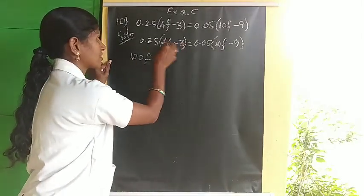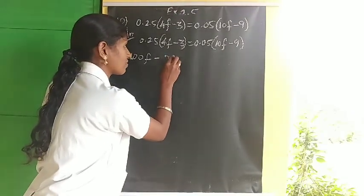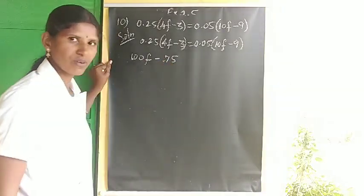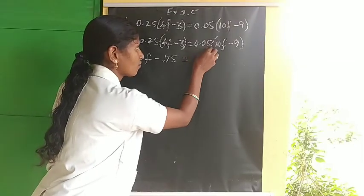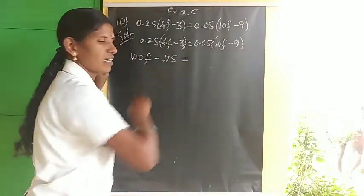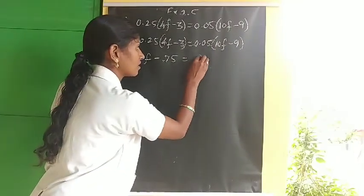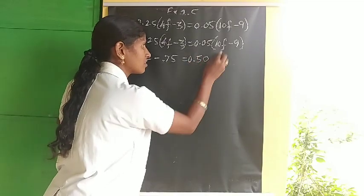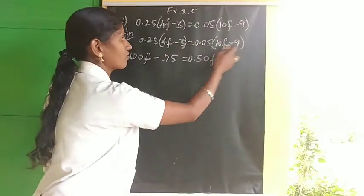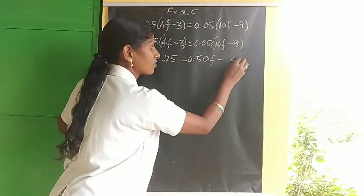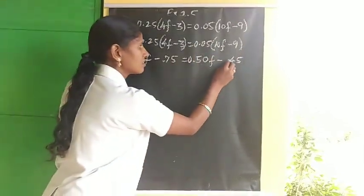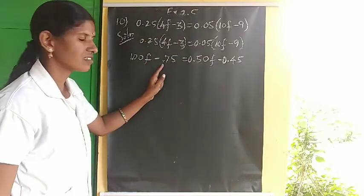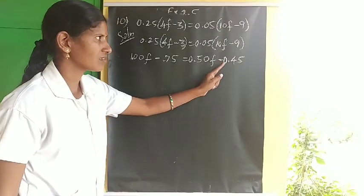For the right side: 0.05 times 10 — multiply 10 times 5 to get 50, place decimal 2 digits from right to get 0.50F. Then 0.05 times 9: multiply 9 times 5 to get 45, place decimal 2 digits from right to get 0.45. So right side is 0.50F minus 0.45. Equation: 1F minus 0.75 equals 0.50F minus 0.45.